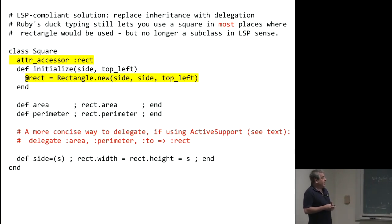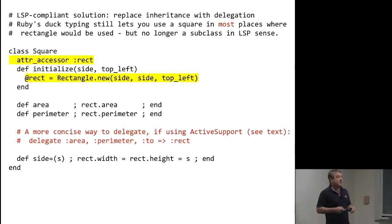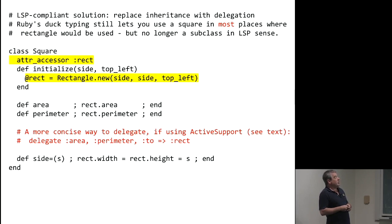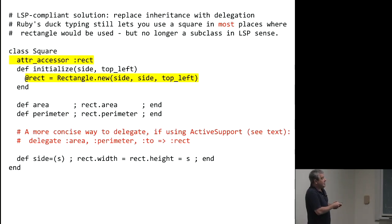It happens to be the case that if you're using Rails, which includes the ActiveSupport module with a bunch of goodies, you can just say delegate area and perimeter to some attribute named by the symbol. This says: if area or perimeter is called on an instance of square, look for a component of square whose name is rect and assume that object will handle the calls. It's a shortcut for delegation — all it's doing is exactly what I've done explicitly: receive the call and have somebody else do the work.